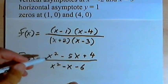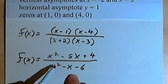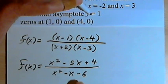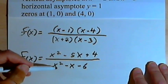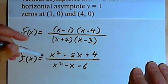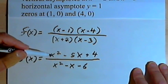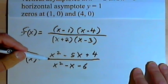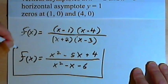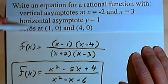The last step is to check that what I've got will give me the appropriate horizontal asymptote. I want a horizontal asymptote at y equals 1. I've got two polynomials — they're both second-degree and they both have the same lead coefficient, which is 1. So the horizontal asymptote is going to be at y equals 1, and that's what I'm looking for. So this equation is the function that meets these requirements.